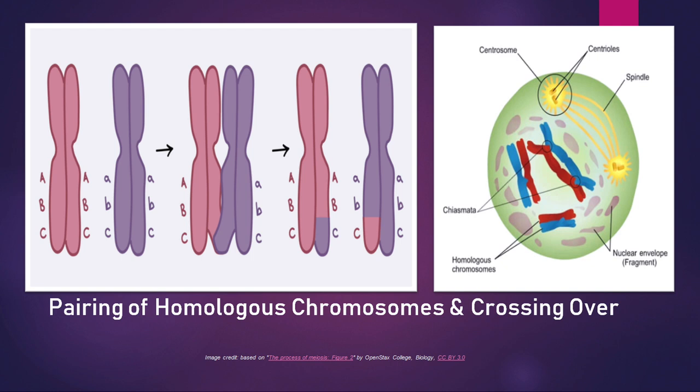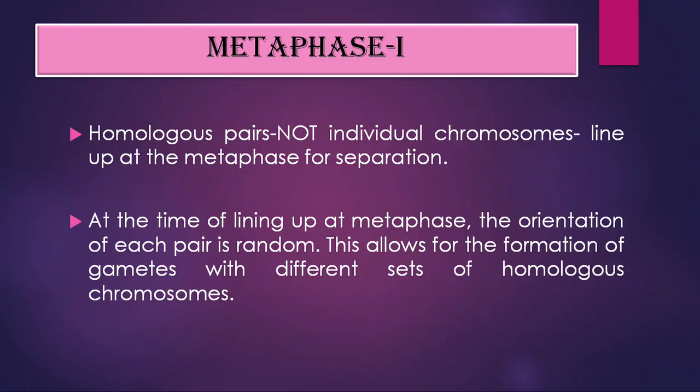For clarity, genes A, B, C on one chromosome and a, b, c on the homologous chromosome are exchanged during crossing over. Inside the nucleus, one chromosome shown in red and another in blue get attached at certain points, exchange DNA material, and then separate — each now carrying a mix of genetic information from both original chromosomes.